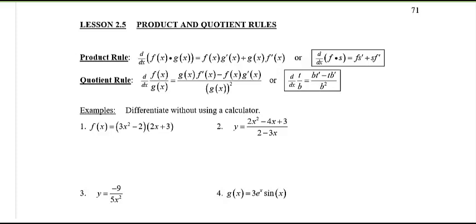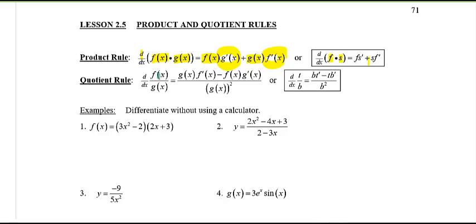Here we go — the product rule. If you're taking the derivative of two separate functions multiplied together, it's not simply the derivative of the first times the derivative of the second. It's actually the first function times the derivative of the second, plus the second function times the derivative of the first: f·s′ + s·f′. That's the product rule.